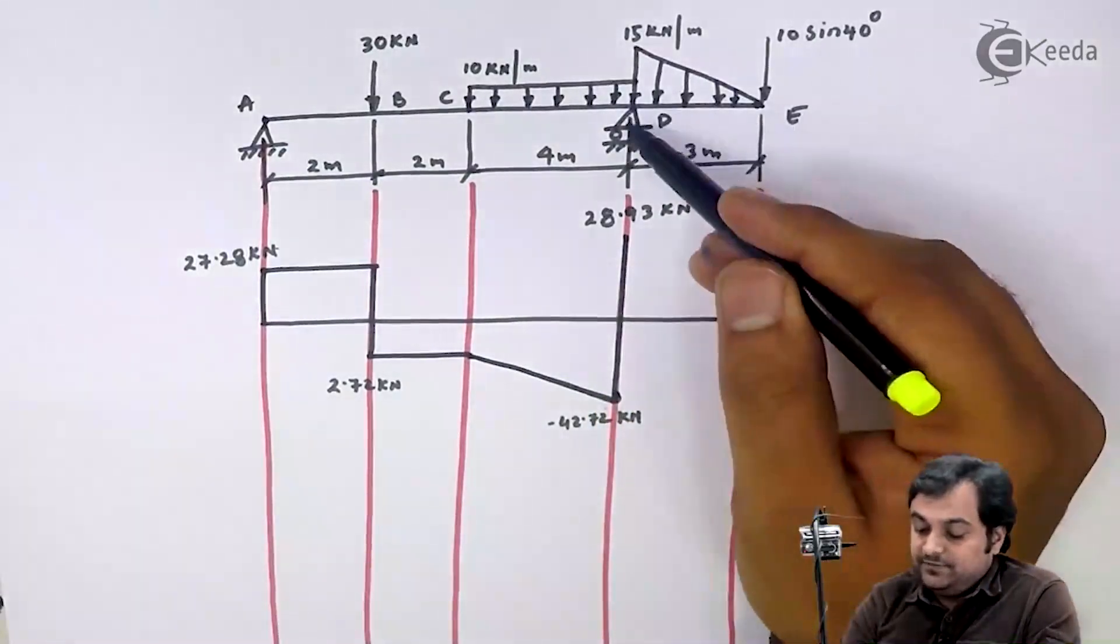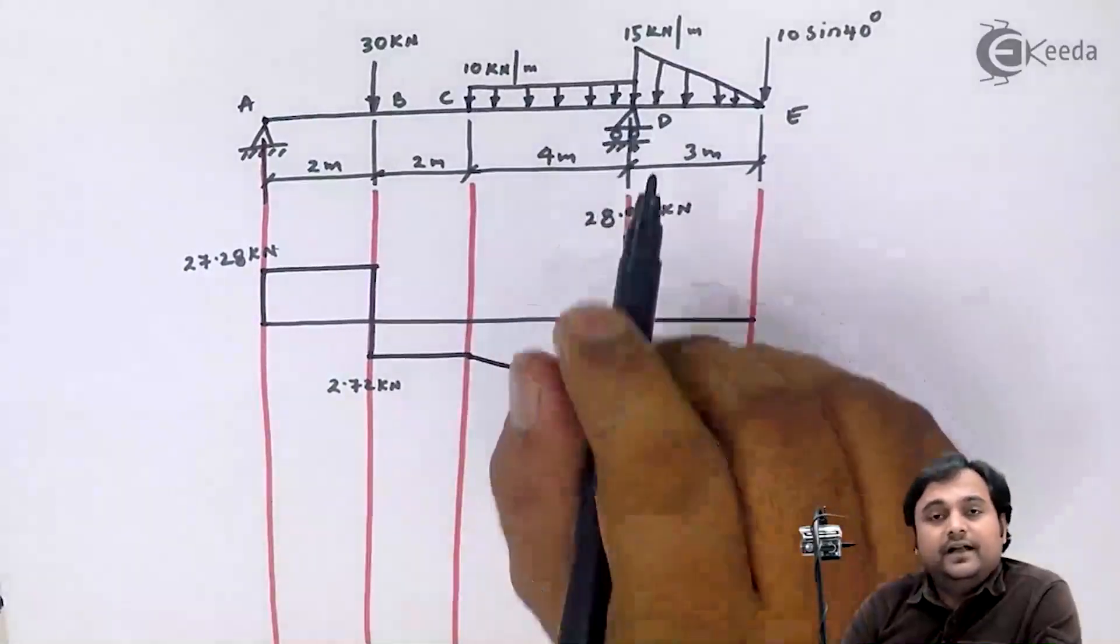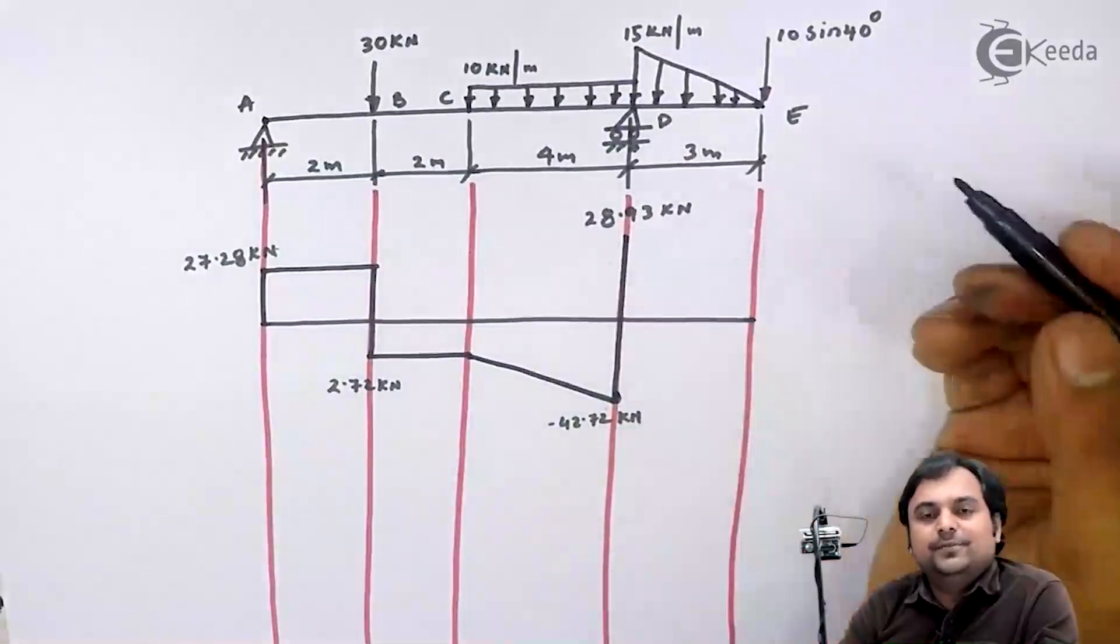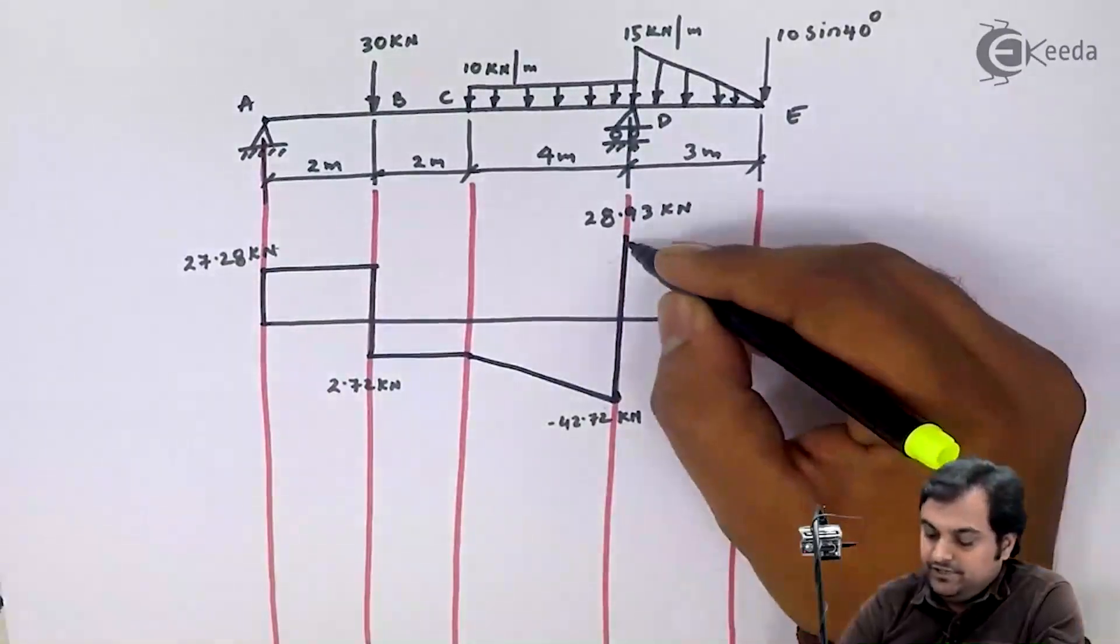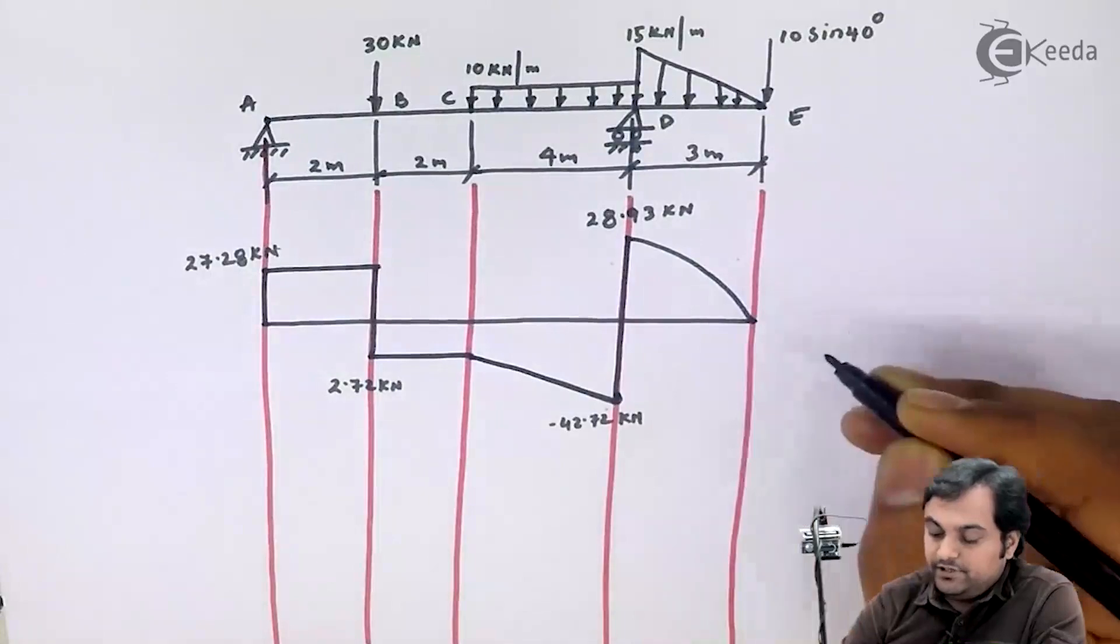As we can see between D to E there is UVL. So whenever we have UVL, in that case shear force will be a parabola. So here I have between D to E a parabolic curve.